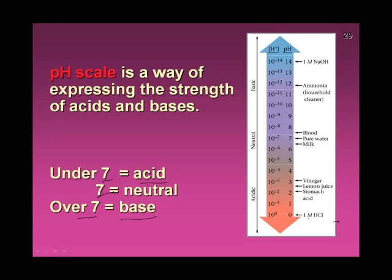We can relate pH back to the molarity of the acid. If I have HCl at one molar, I've got a pH of zero. Stomach acid is also HCl — at a concentration of 0.001, which is 10 to the minus 3, the pH is 3. That's a really strong, concentrated acid — so concentrated it would kill you if it leaked out of your stomach and destroyed surrounding organs.